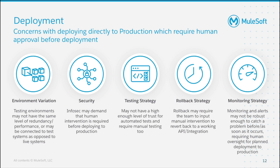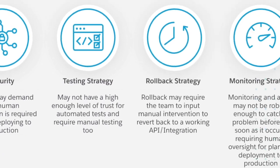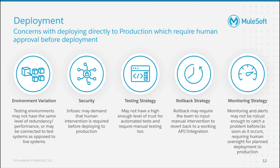A quick note: we're talking about continuous delivery, not continuous deployment. In continuous deployment you automatically deploy to production. Here are some reasons why customers stop at continuous delivery: the testing environment may not be mature or similar enough to production to be reliable; there may be regulations or security concerns; there may be lack of trust in automated tests that are still immature; lack of rollback processes if something happens in production; and lack of monitoring and alerts to detect problems occurring in production. So today we focus on continuous integration and continuous delivery, not continuous deployment.